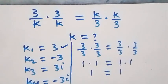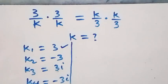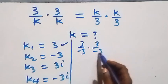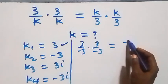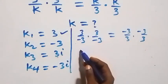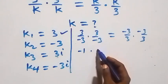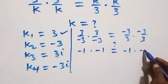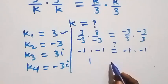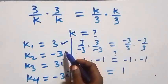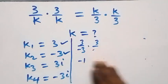For the second value k equals minus 3: substituting, we get 3 over minus 3 times 3 over minus 3, which is minus 1 times minus 1, giving plus 1. On the right side, minus 3 over 3 times minus 3 over 3 is also minus 1 times minus 1, giving plus 1. Left hand side equals right hand side, so k equals minus 3 also satisfies the given problem.